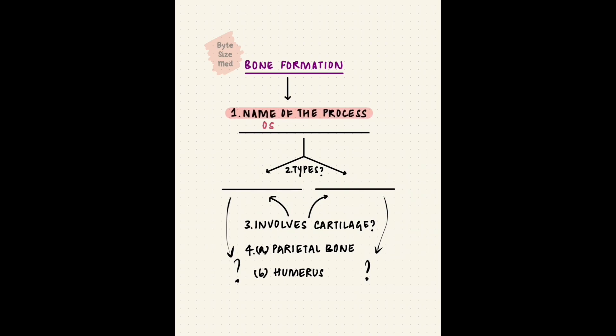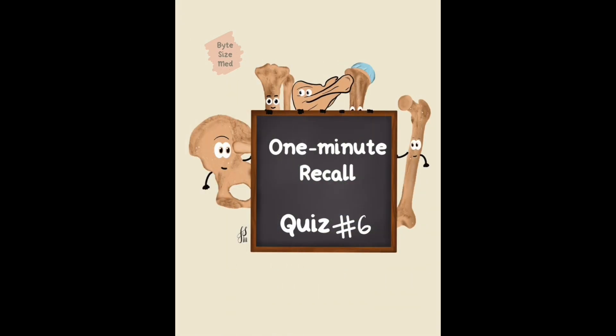Time's up. Bones form by a process called ossification. That can happen directly from the mesenchyme when it's called intramembranous ossification, or from a cartilaginous template when it's called endochondral ossification. Here cartilage gets replaced by bone - it doesn't form bone, it gets replaced. The parietal bone, which is a flat bone of the skull vault, is a membrane bone forming by intramembranous ossification. And the humerus, which is a long bone, is a cartilage bone forming by endochondral ossification. That's bone formation.